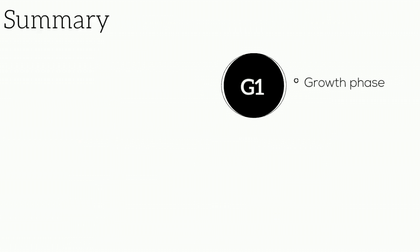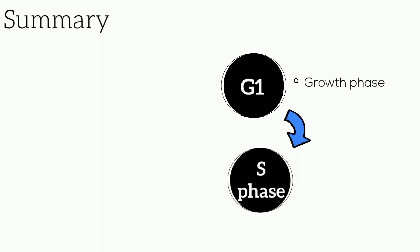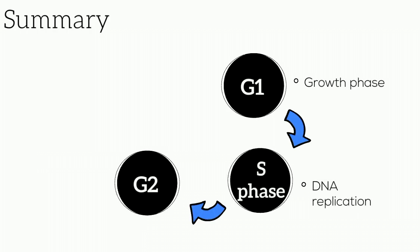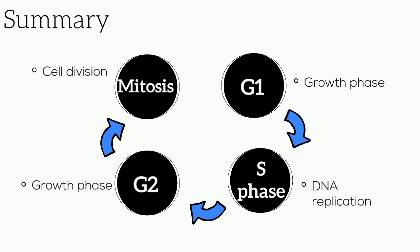To summarize the cell cycle: the cell first begins in G1, which is a period of growth, followed by S phase, in which DNA replication occurs, followed by G2, which is another growth phase, and then finally mitosis, the process of cell division with five stages.